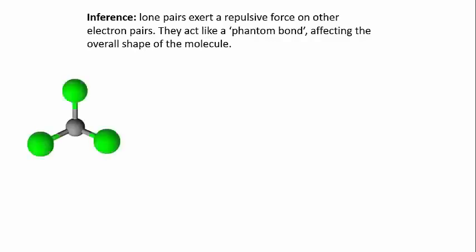So rather than thinking of ammonia as being based on a central atom with three bonds around it, which would make us think of a trigonal planar shape, we need to think of it as having a central atom surrounded by three bonds and a lone pair—a total of four electron groups. And this makes it more like methane with tetrahedral geometry.